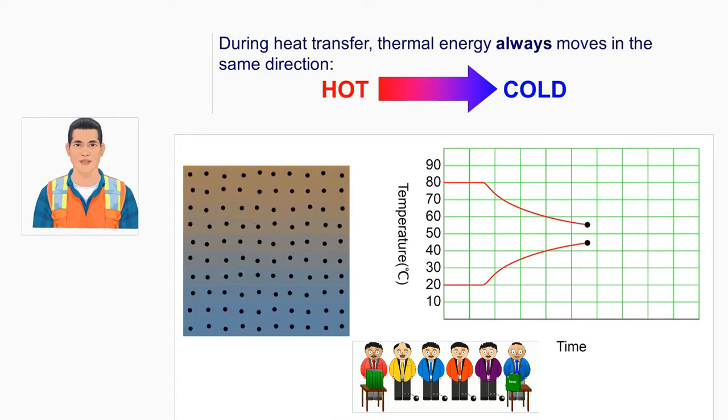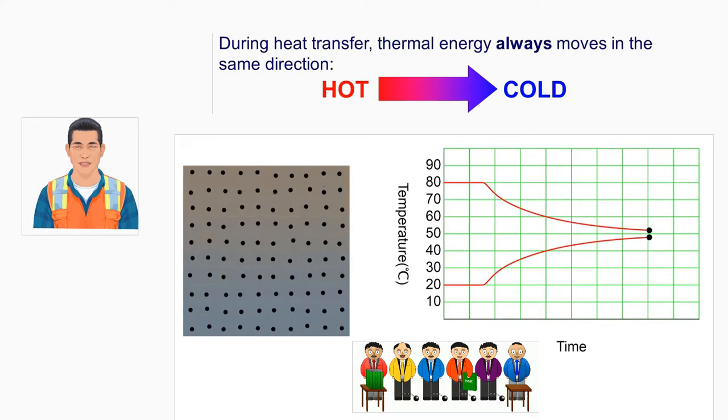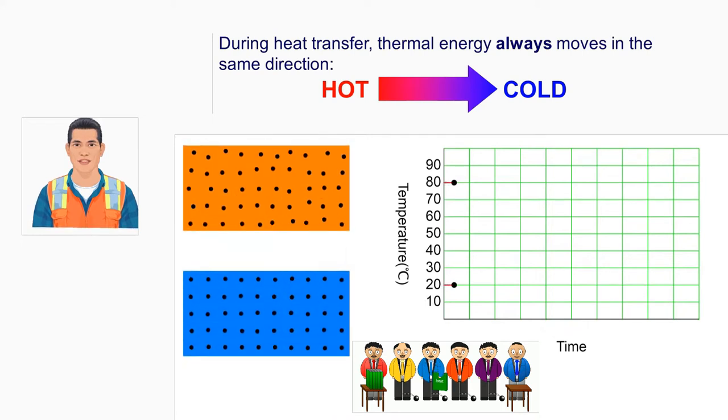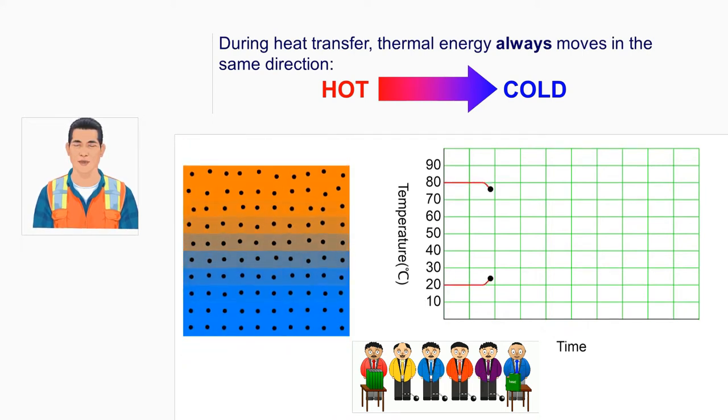When a hot and a cold body are in thermal contact, they exchange heat energy until they reach thermal equilibrium, as shown in the graph on my left, with the hot body cooling down and the cold body warming up. This is a natural phenomenon we experience all the time.